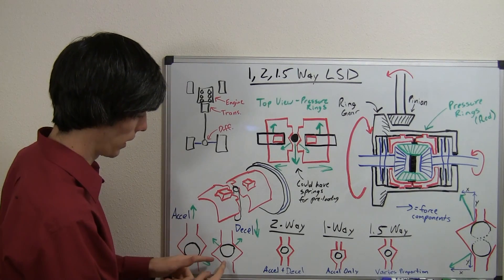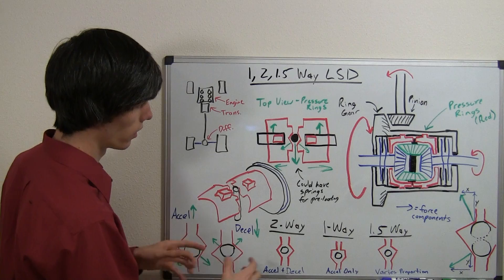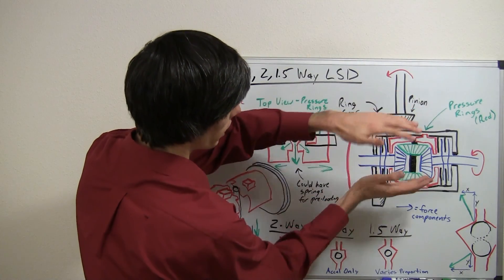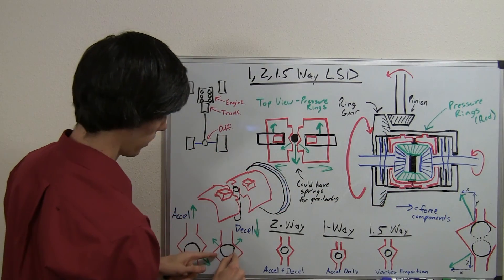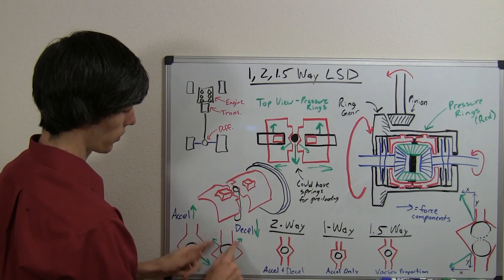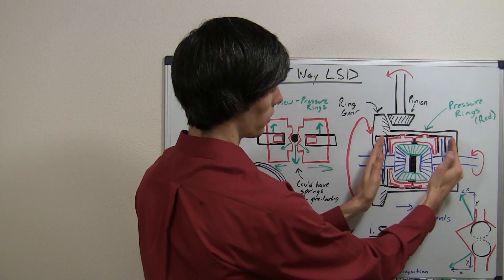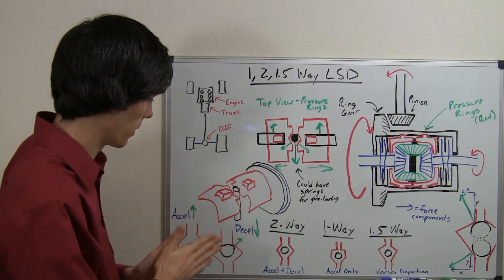So, when you decelerate, then the opposite is going to occur because your wheels are going to be slowing you down, so the differential is going to be kind of acting like that, and these pressure rings are going to push against the pinion shaft in the other direction, so that it's going to exert a force in that direction, push these pressure rings out, compress the clutch packs, and you've got your differential locked up.